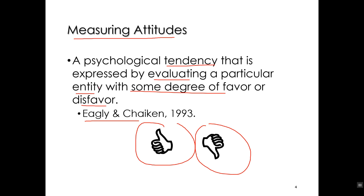By 'entity,' we're talking about a person, a place, an event, a thing. So if I ask you what do you think of Manhattan — thumbs up or thumbs down? That's your attitude about Manhattan. If I ask you about Bill Clinton — thumbs up or thumbs down? That's your attitude about Bill Clinton.